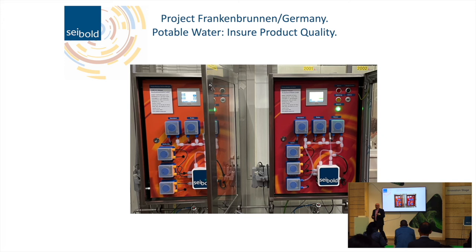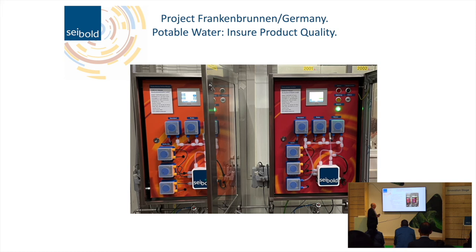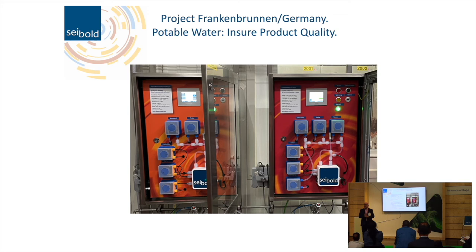Some examples from real installations. First is Frankenbrunnen, a mineral water company in Bavaria. We have an installation measuring 13 different sample streams, from raw water to quality assurance for the end product, in different time sequences. The matrix of the water is very different from sample to sample, and the measurement range we need to cover is from 0 to 10 PPM — a huge range. We cover this with two analyzers: an iron-manganese analyzer and a nitrite analyzer, with iron-manganese as a double measurement.